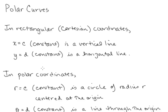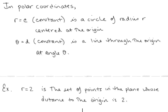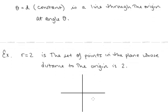But in polar coordinates, r equals c, where c is constant, is a circle of radius r centered at the origin, because it's all the points that have a radial distance to the origin of c. For example, r equals 2 is a set of points in the plane whose distance to the origin is 2.